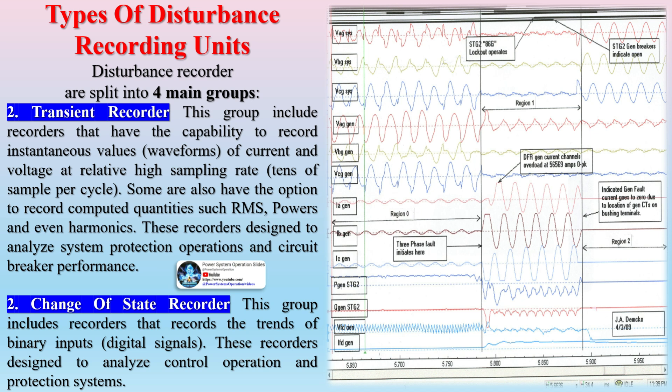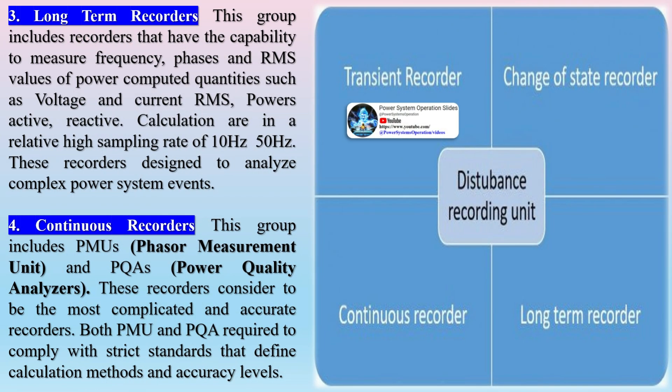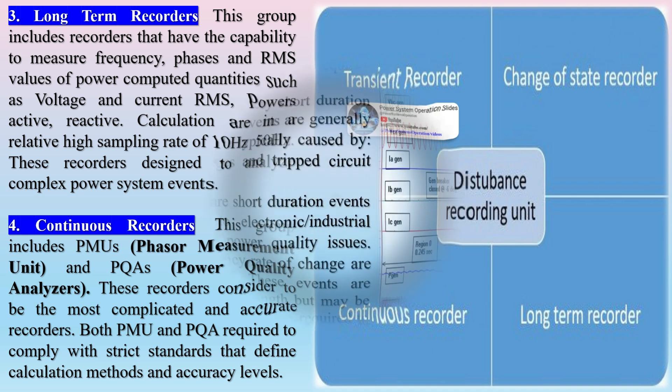Types of disturbance recording units: disturbance recorders are split into four main groups. Transient recorder: this group includes recorders that have the capability to record instantaneous values and waveforms of current and voltage at a relatively high sampling rate of tens of samples per cycle. Some also have the option to record computed quantities such as RMS, powers, and even harmonics. These recorders are designed to analyze system protection operations and circuit breaker performance. Change of state recorder: this group includes recorders that record the trends of binary inputs and digital signals, designed to analyze control operation and protection systems.